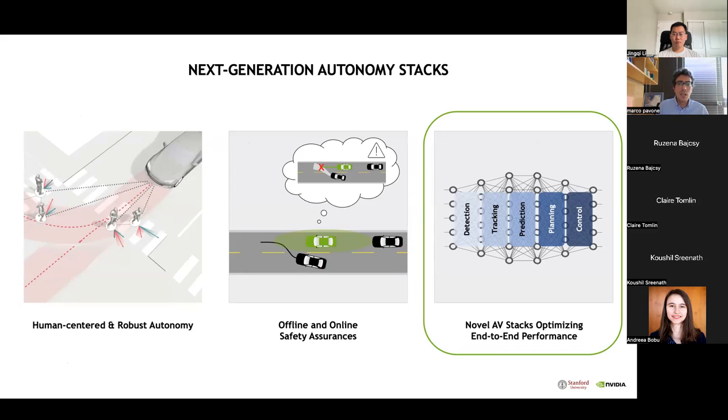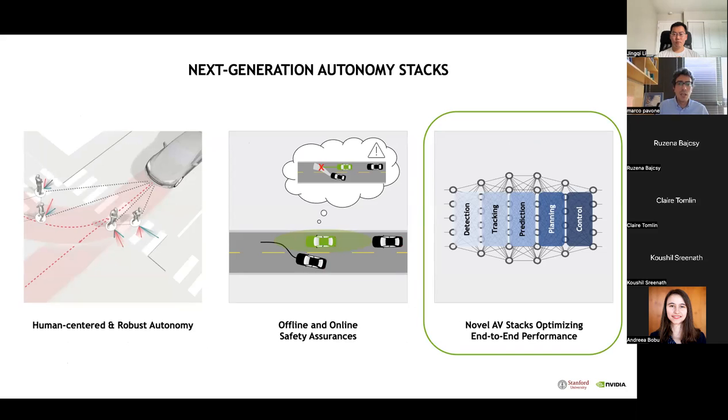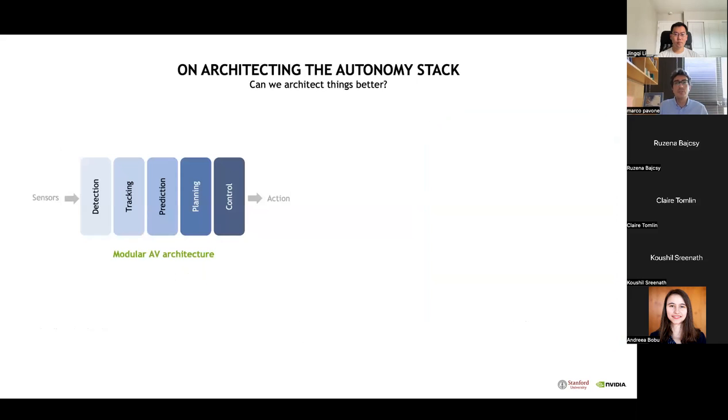In the last few minutes of this talk, I will talk about architecting work that I'm quite excited about. An assumption that has been implicit so far is that we have been assuming a rigid modular architecture for an autonomy stack, for example, with the perception model driving the planning and control models. A natural question to ask is whether we can consider alternative architectures that are more conducive to safe and high-performance control.